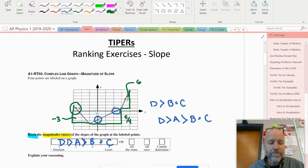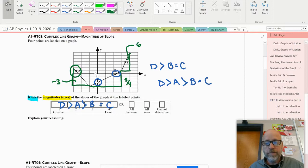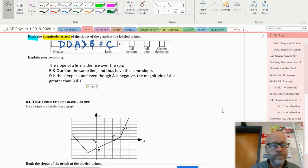Take a moment and explain your reasoning, write it out in a few sentences. This is what I wrote: the slope of a line is the rise over the run. B and C are on the same line and thus have the same slope. D is the steepest, and even though A is negative, the magnitude of A is greater than B and C. I feel pretty good about that.